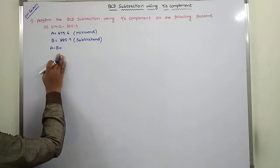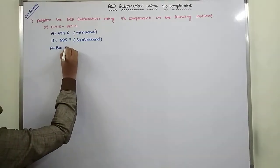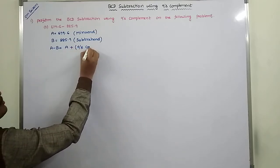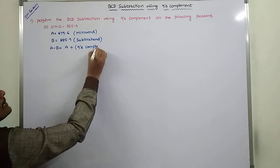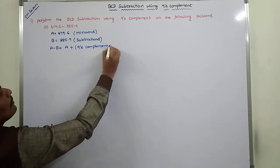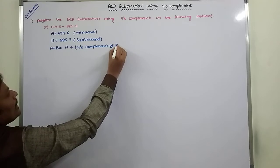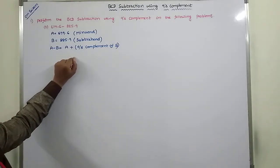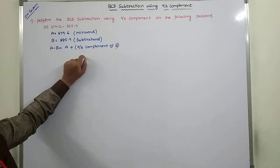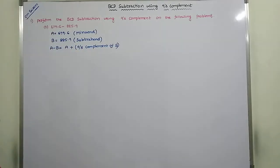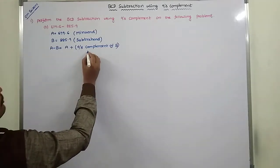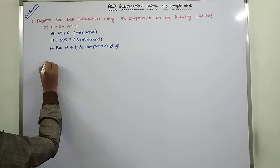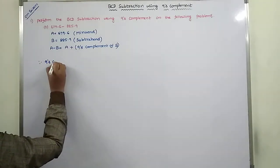We have to perform A minus B, which is equal to A plus the nice complement of B. This means the subtraction operation can be converted into an addition operation by taking the nice complement of the suprahan. So now we have to find out the nice complement of B.